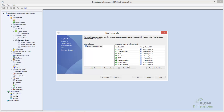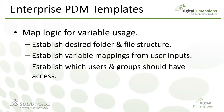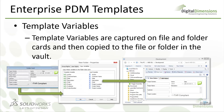The column immediately to the right contains the template variables. Template variables are the runtime variables that capture the user's input and then push them from the template variable into the card variable. As the file or folder gets written into the vault, that information is placed into the file automatically, and then the template variable is purged. So a template variable is really just a runtime variable for use with Enterprise PDM templates.